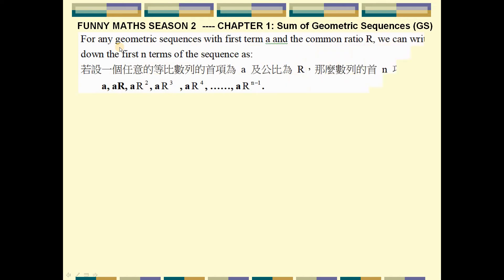Let us see the statement. For any geometric sequence with first term equal to A and common ratio equal to R, we can write down the first N terms: A is the first term, AR is the second term, AR squared is the third term, and so on. The last term is AR to the power N minus 1.